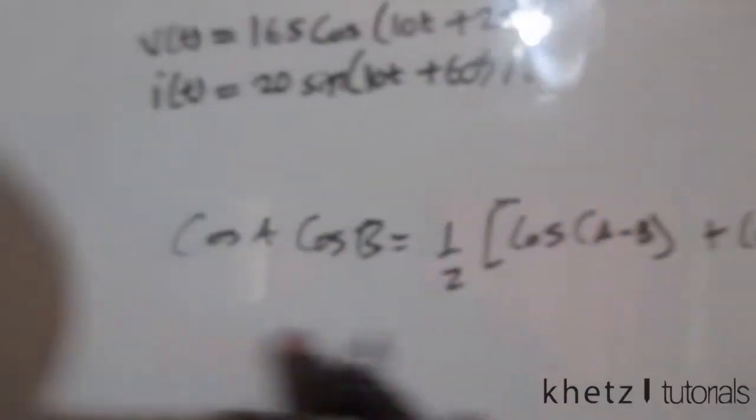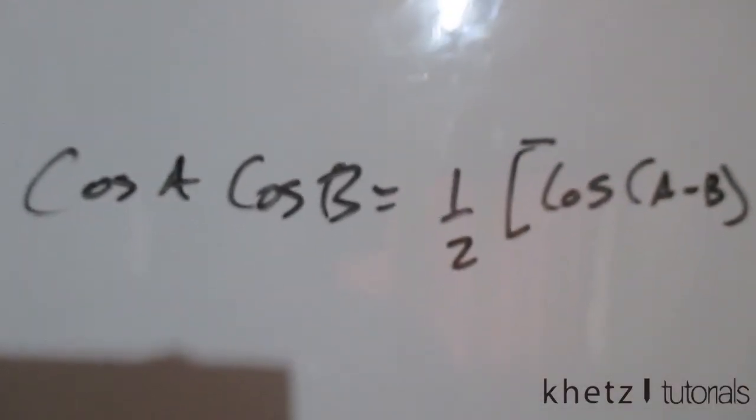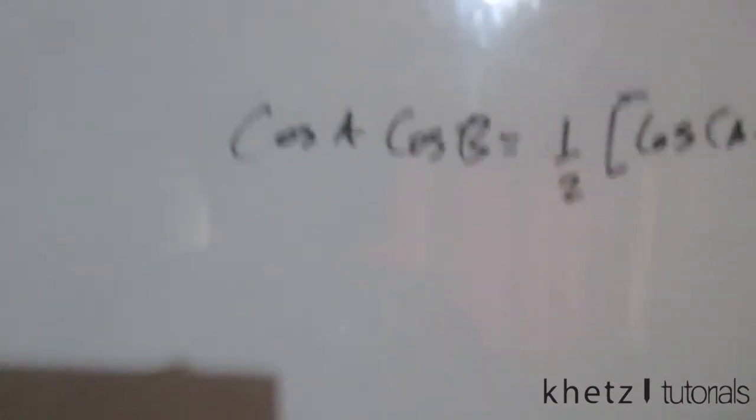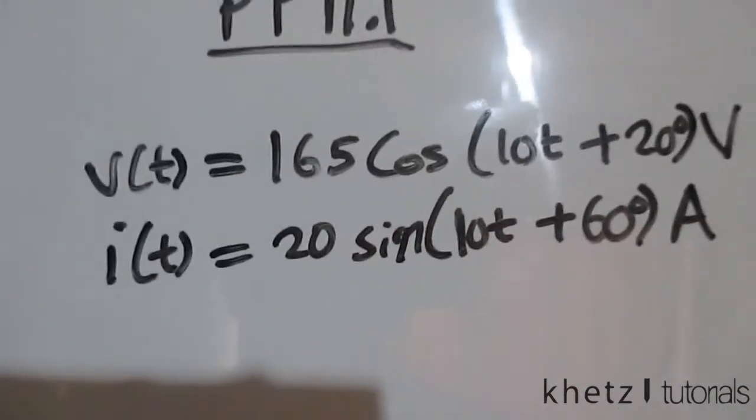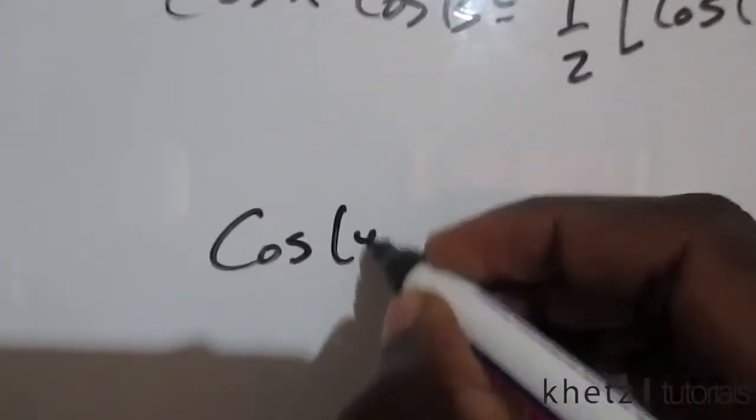And this identity is helpful when we are actually dealing with instantaneous power because if you were to write both of these in terms of cosine then having a general form of this.